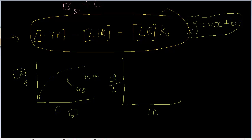Let me show you how to do that. If we do this, we can get a linear equation. We'll have valuable information: we can find out the slope, which is 1 over KD or 1 over EC50 — one and the same. And the intercept is Emax or TR.